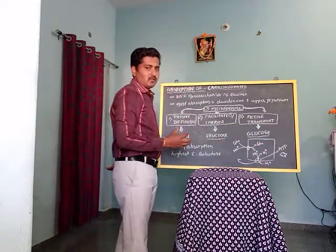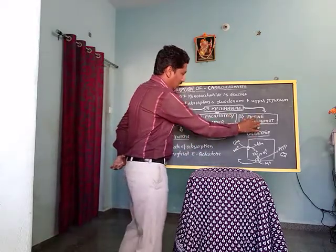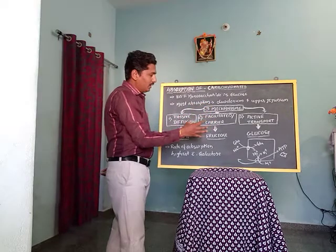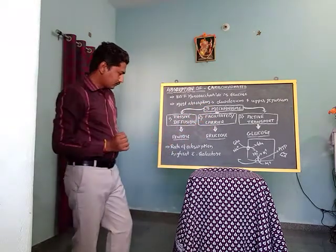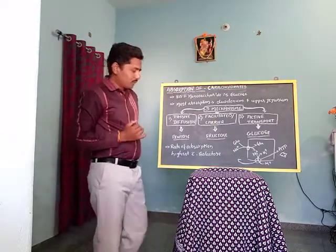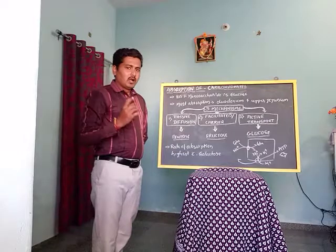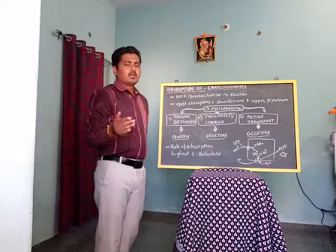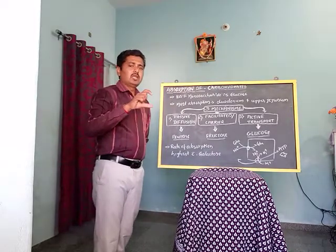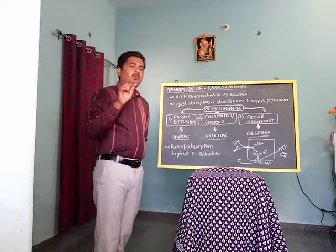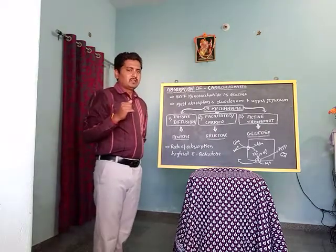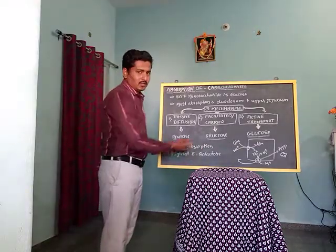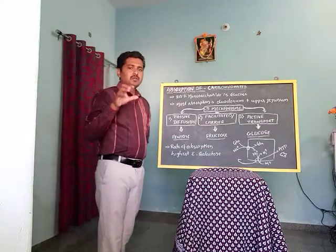Wherever there is utilization of ATP, that process is called active transportation. Regarding the rate of absorption of monosaccharides, galactose has the highest rate — it is absorbed up to 110%, which is higher than both glucose and fructose. Galactose is the most quickly and easily absorbed monosaccharide.